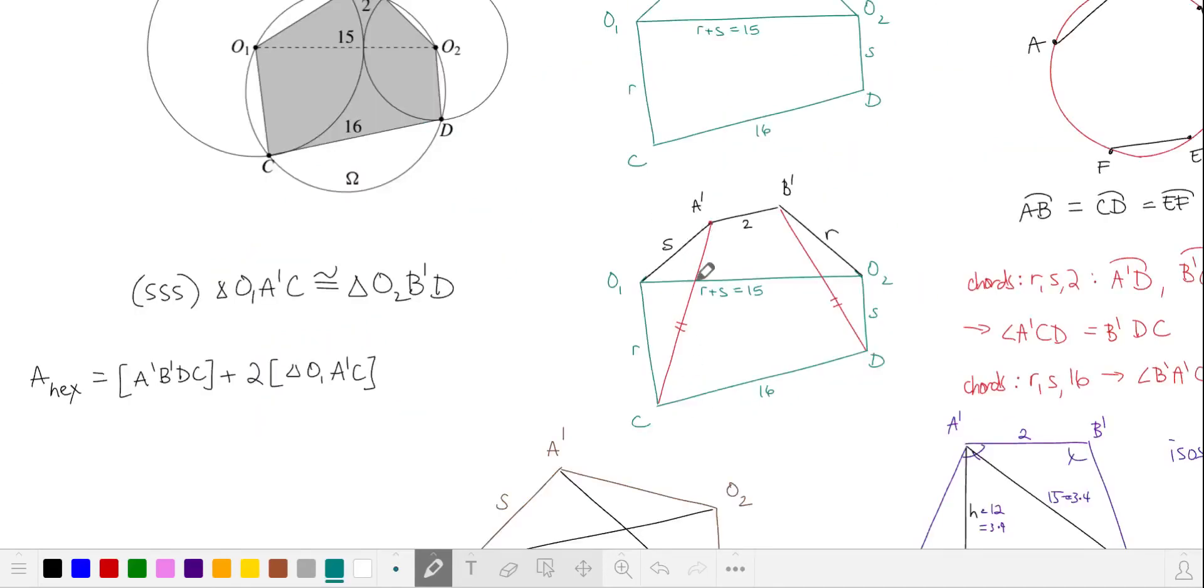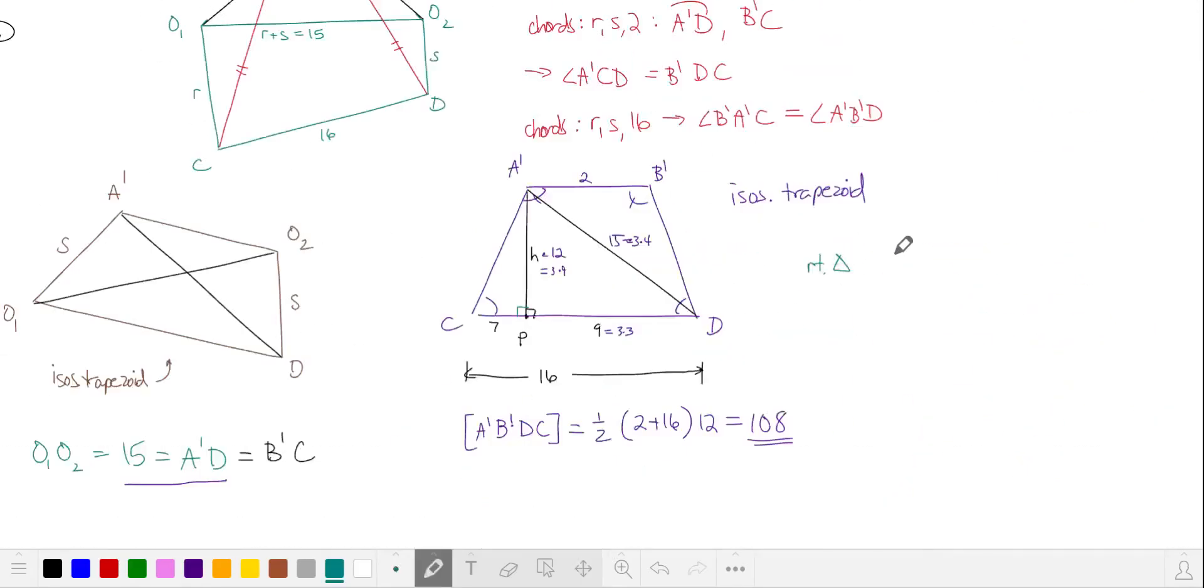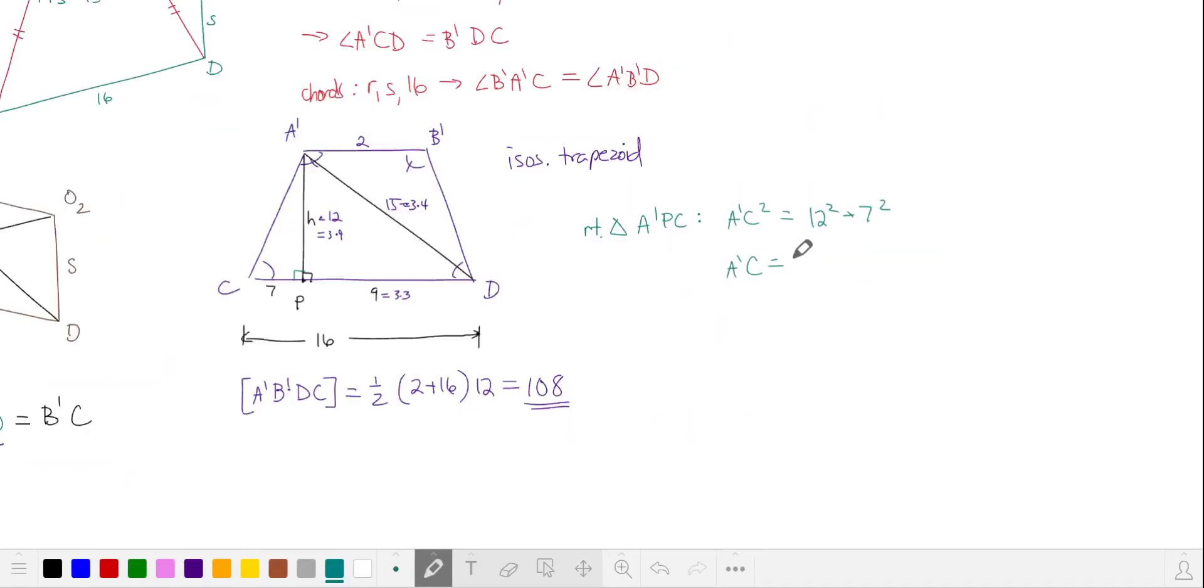Now we want to find the area of this small triangle on the left. Let's see if we can find the length from A prime to C, which is also part of the trapezoid. We'll apply the Pythagorean theorem to triangle A prime, P, C. So AC is the square root of 193.